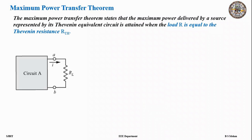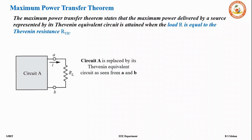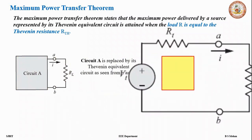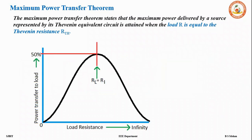What are the parameters in the Thevenin equivalent circuit? If we have a circuit A and we have some load parameter connected across A and B, the power can be delivered from circuit A to the load only when the value of RL is equal to RTH. Any circuit can be reduced to a Thevenin equivalent circuit or a practical voltage source — a voltage source in series with its internal resistance.